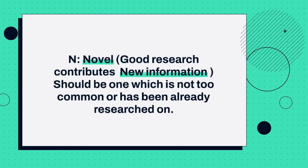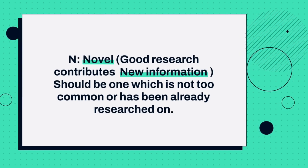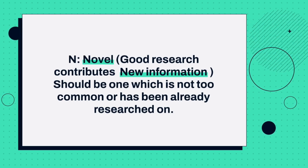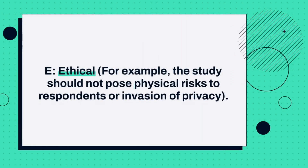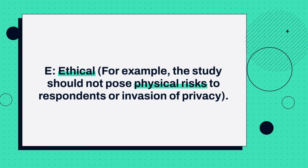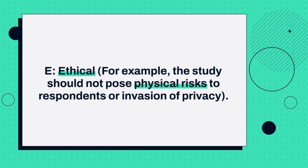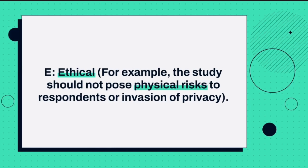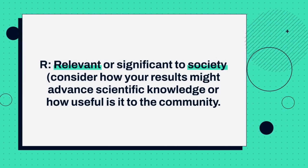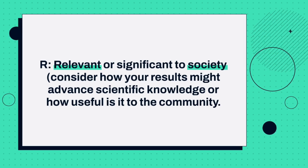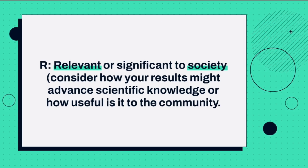N stands for novel, meaning the research problem is not too common, so we expect to get some new information — it should not be one that has already been heavily researched. E stands for ethical: the study should not pose physical risks to respondents or invade their privacy, so you must follow the ethical rules of research. R stands for relevant or significant to the society — you are considering how your results might be of help to the study area and how useful the findings will be.